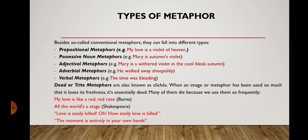Besides so-called conventional metaphors, they can fall into many different types. Some linguists classify metaphors according to parts of speech, pointing out prepositional metaphors, possessive noun metaphors, and adjectival metaphors — for example, 'Mary is a withered violet in the cool, bleak autumn' — or verbal metaphors, for instance, 'he walked away sheepishly,' meaning he walked away like a sheep. Or, for example, 'the time was bleeding.'